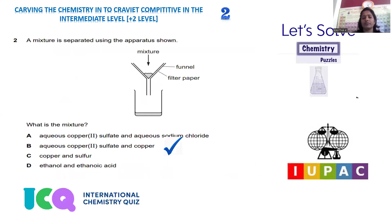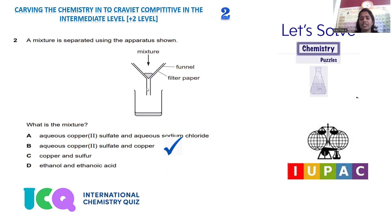Let's go to question number two. The mixture is separated using the apparatus shown. Separation of mixtures is possible in different ways — separating funnel, evaporation, solubility method, melting point, boiling point. The apparatus shown is for separating solid and liquid by filtration. Here we take a mixture of compounds, pour them into a funnel equipped with filter paper — this is a simple filtration process.